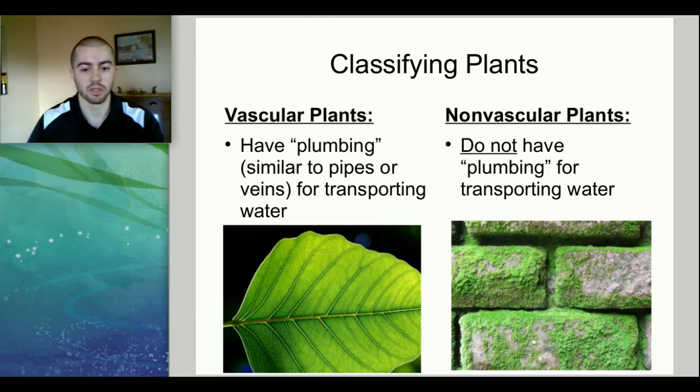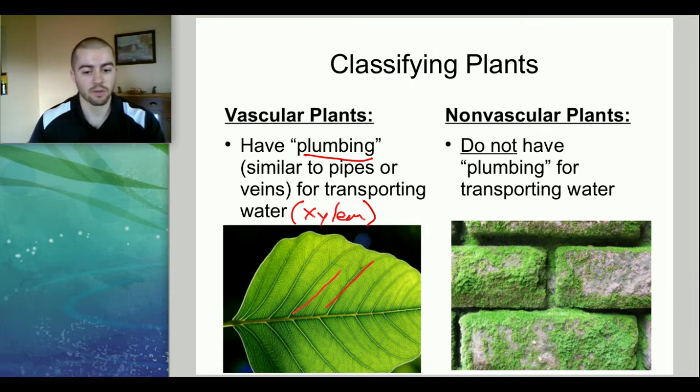Vascular plants have this sort of plumbing. You can think of it like pipes or veins in the human body that are used to transport water and food. This is called the xylem, and that's what transports water throughout the plants. If we look at a leaf like this, you've probably seen a leaf that has these little veins here. These are for transporting water throughout the plant, in this case throughout the leaf. Even in a tree, in the trunk, there's going to be a lot of these little xylem tubes for transporting water. If we compare that to something like moss over here that grows on rocks or bricks, these do not have pipes for transporting water. That's why they are non-vascular plants because they don't have this sort of plumbing system to transport water throughout the plant.